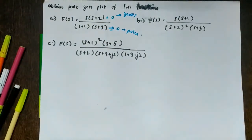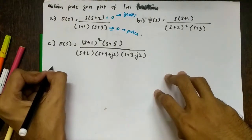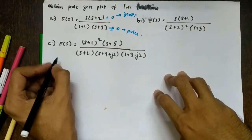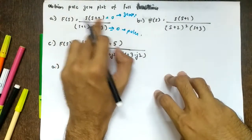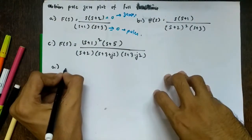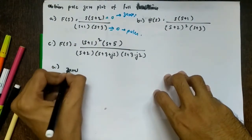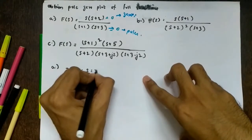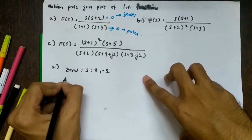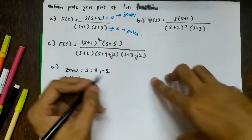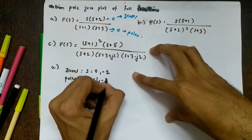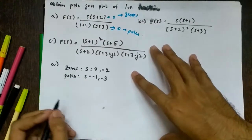For part A, equating the numerator to zero gives s = 0 or s + 2 = 0, so the zeros are at s = 0 and s = −2. For the poles, we get s = −1 and s = −3.